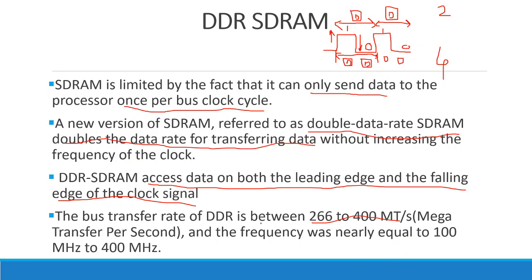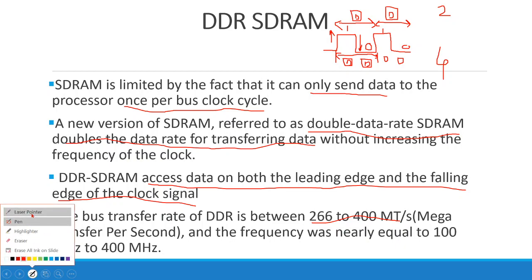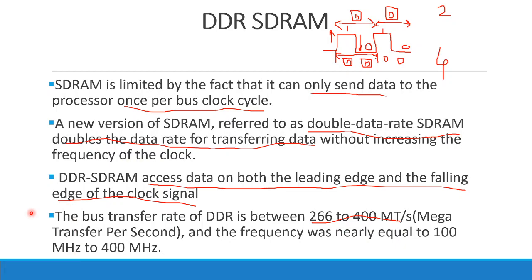To summarize DDR SDRAM: in regular SDRAM, one clock cycle sends one data item. In Double Data Rate SDRAM, one clock cycle sends two data items — on the leading edge and the trailing (falling) edge. So the data rate is doubled. That is DDR SDRAM.